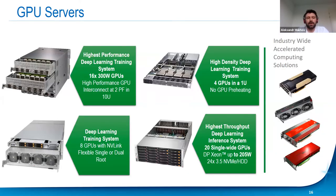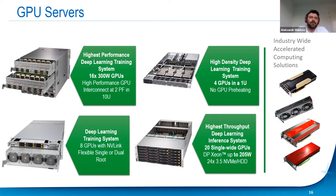A big part of Supermicro's hardware portfolio is GPU servers, which are also important for cloud computing. Supermicro has the highest-density deep learning system with four GPUs in 1U servers, and also a system with the highest performance featuring 20 single-wide GPUs in 4U. Of course, we also have our latest RedStone systems with AMD and Intel CPUs with flexible single or dual root configurations.